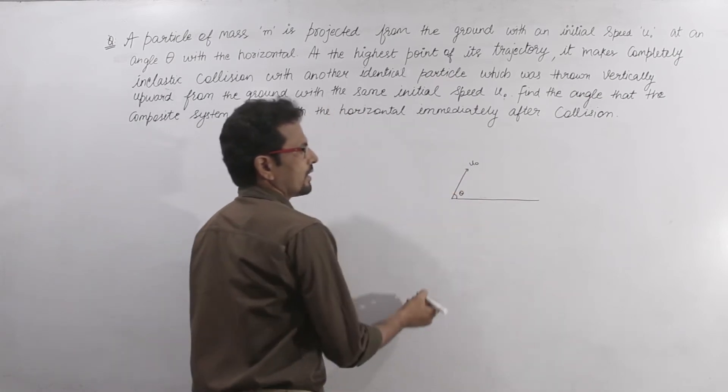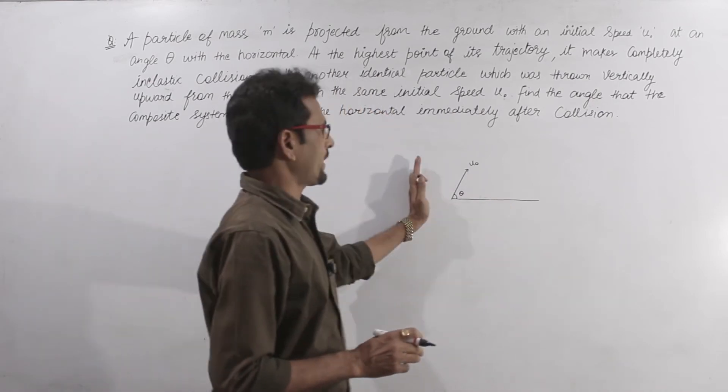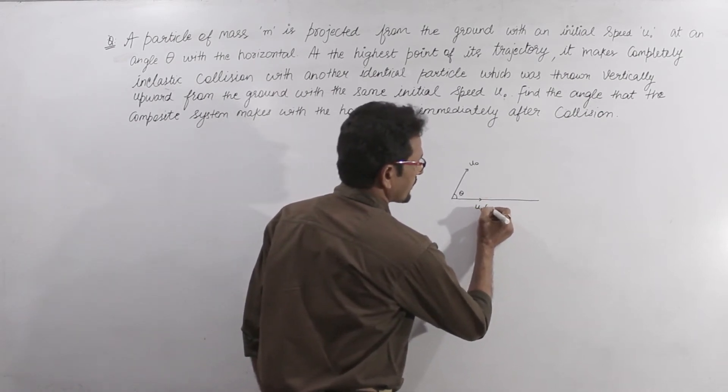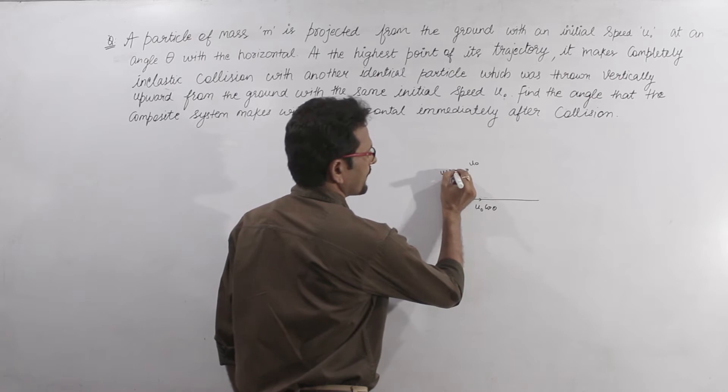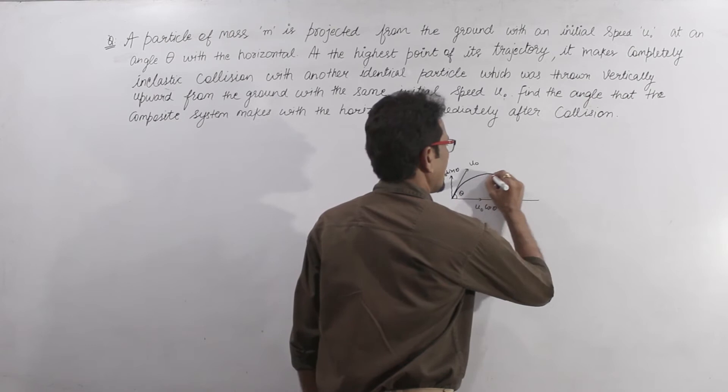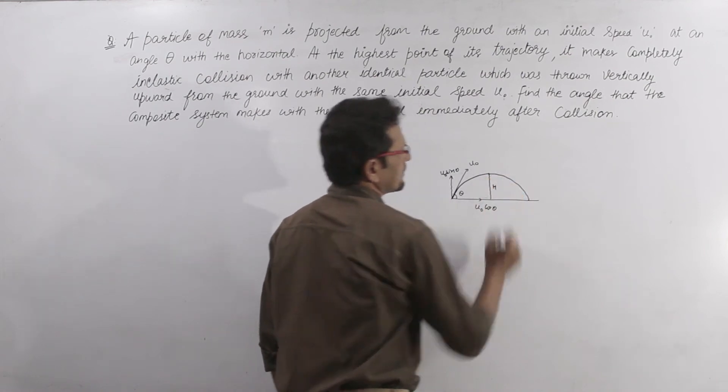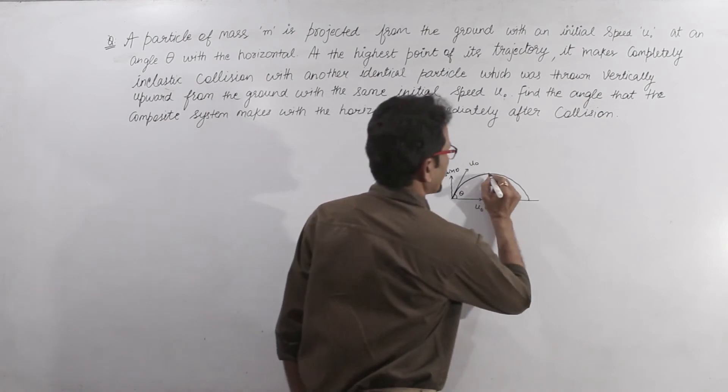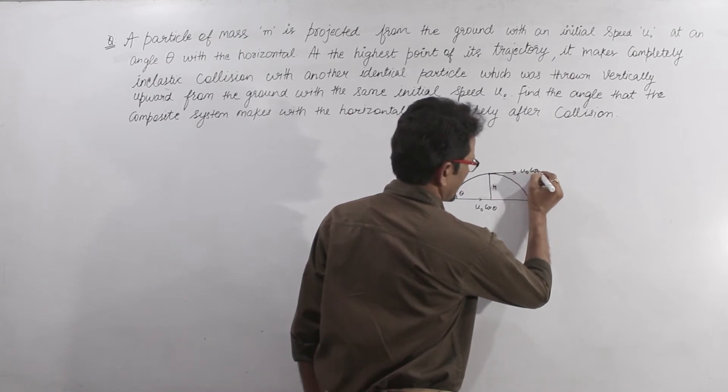So, the horizontal component is u0 cos theta and the vertical component is u0 sin theta. At the highest point of its trajectory, this is the highest point. The vertical component at this point is zero. We have the same velocity here, v1 equals u0 cos theta.